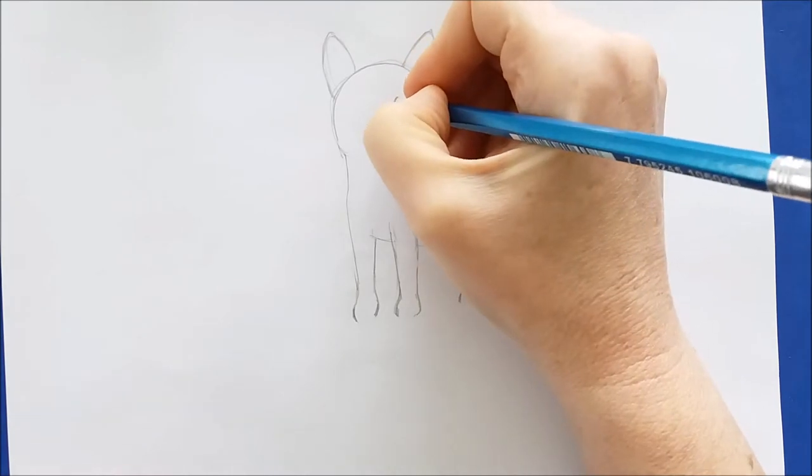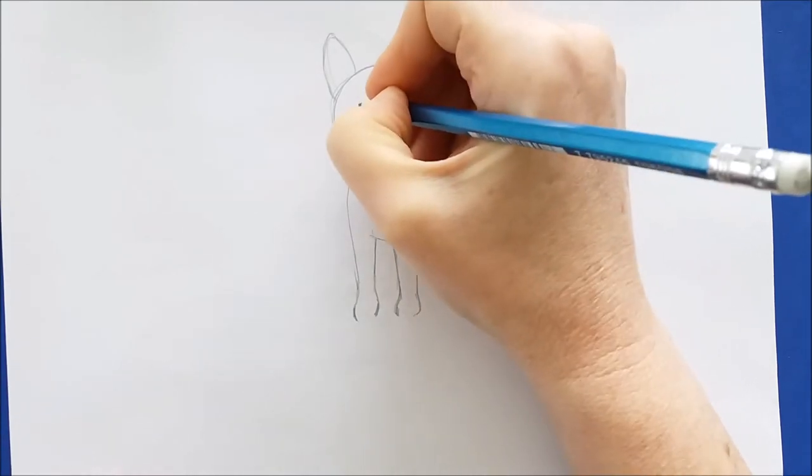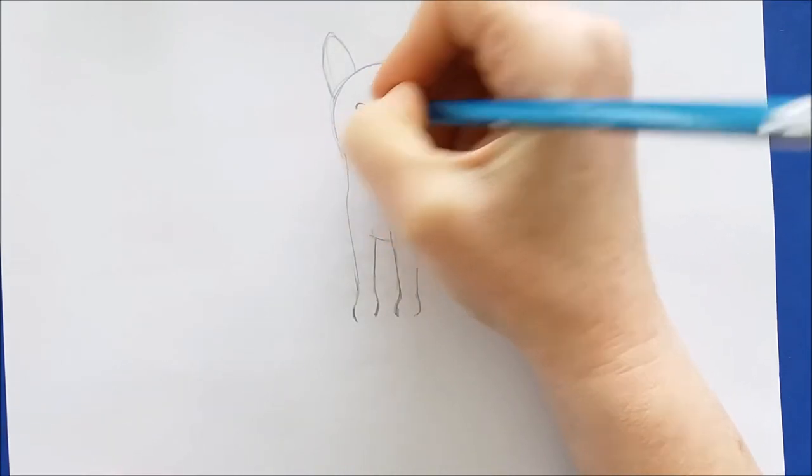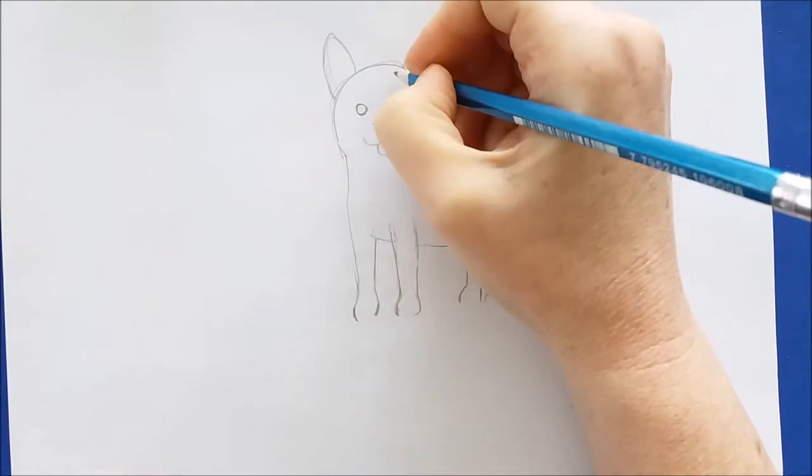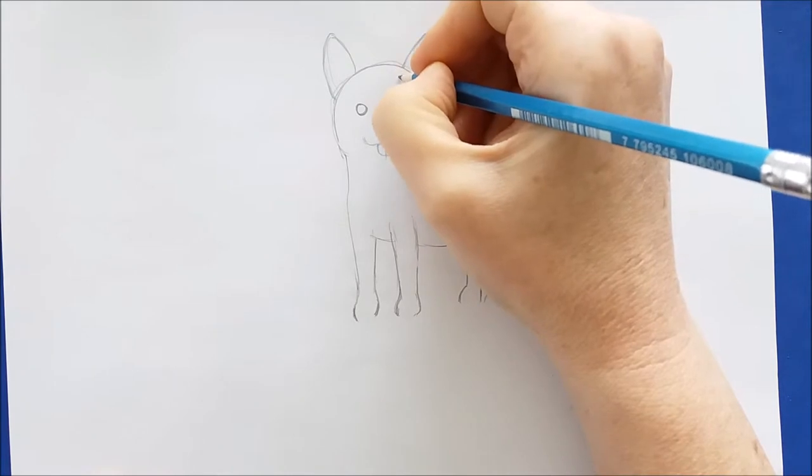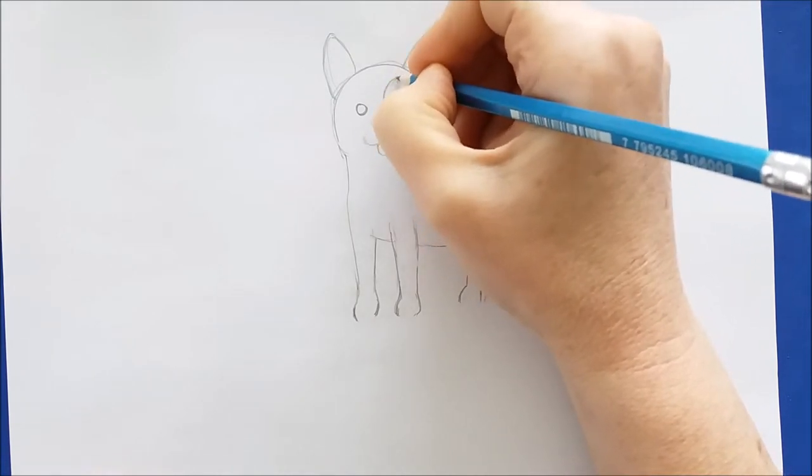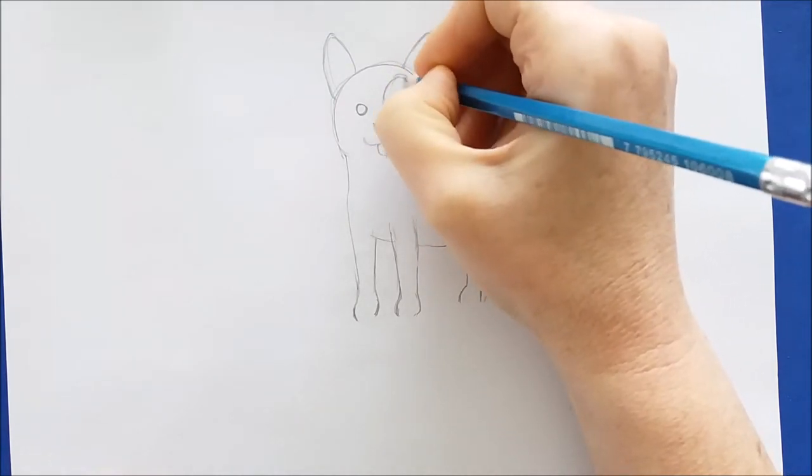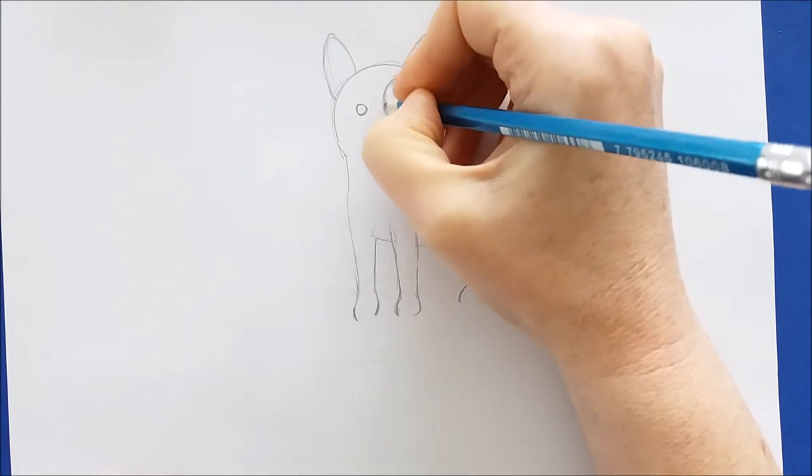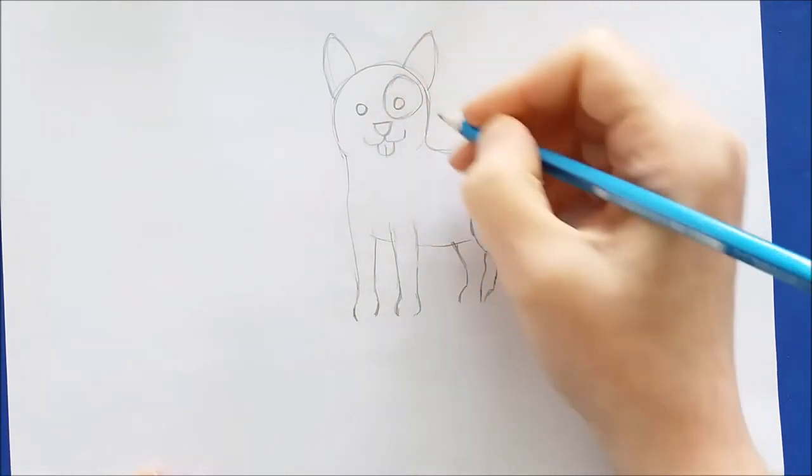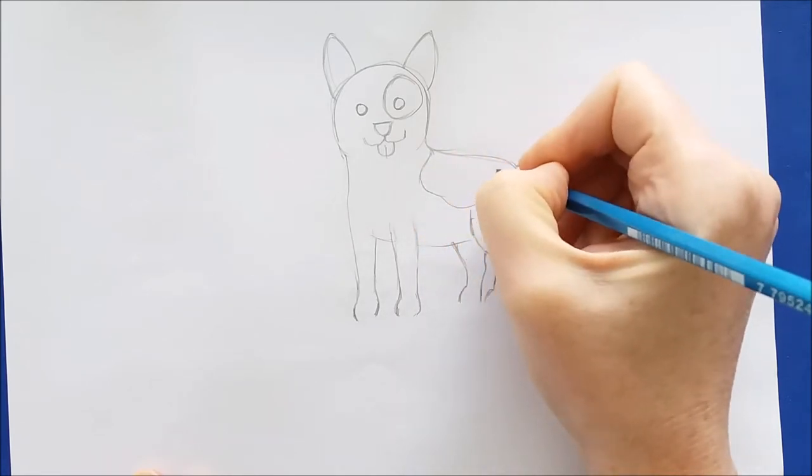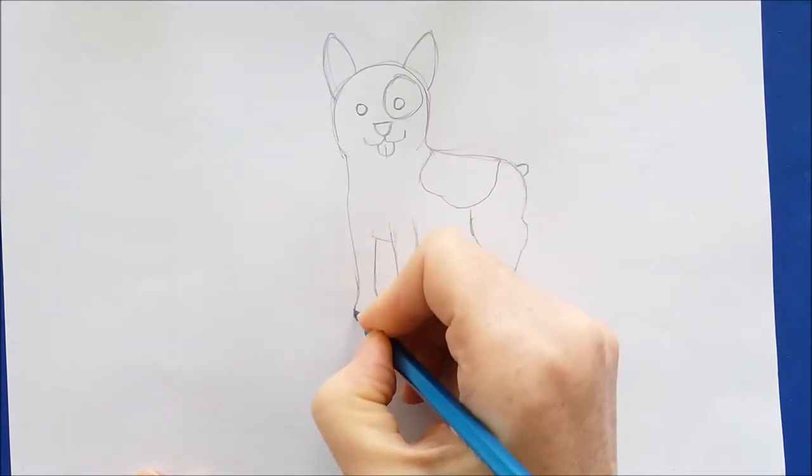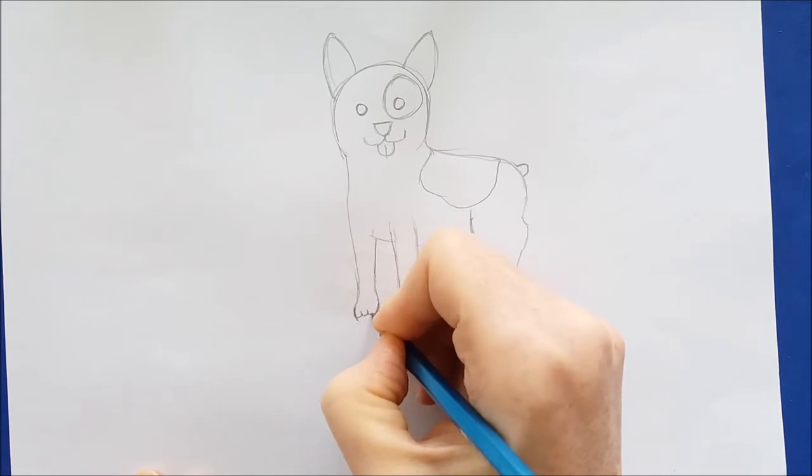The next thing we'll do is draw in a little tail right back here, which is just a small rounded shape. Then I'll go back to his face and draw his eyes in, which are two circles. Because French Bulldogs oftentimes have patches over their eyes, I'm going to draw a patch over this Bulldog's eye. Then I'll draw a large spot on the back of the Bulldog.